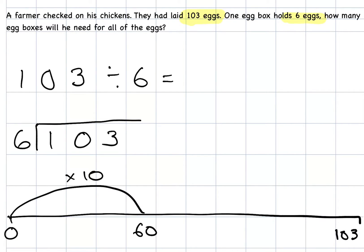So, then I think, could I do another 10 jumps of 6? Oh, no. Because if I did another 10 jumps of 6, that would be another 60. And 60 add 60 would be more than 103. So, could I do 5 jumps of 6? Well, 5 jumps of 6 would be 30. 60 add 30 would be 90. So, I could. So, I could do 5 jumps of 6, which would be 30. So, 60 add 30 would get me to 90.